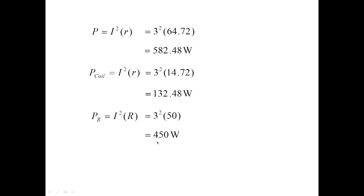I hope you understand what I am trying to say. The total power formula is P = I² × (capital R + small r), where the (R + r) term must not be omitted. Overall, the total power of the circuit is 582.48 watts, divided between the coil and the non-inductive resistance. This is how we solve choke coil problems.